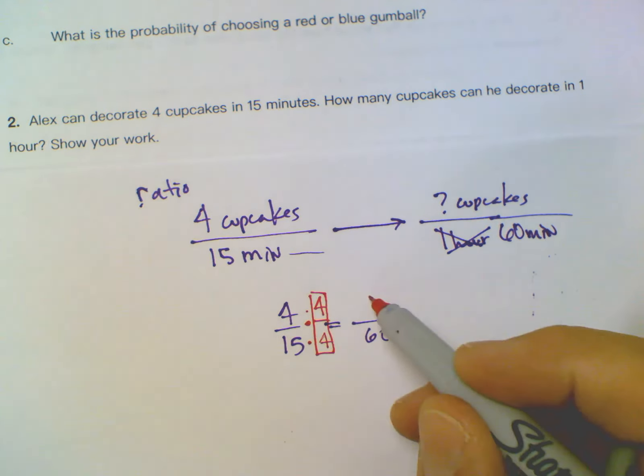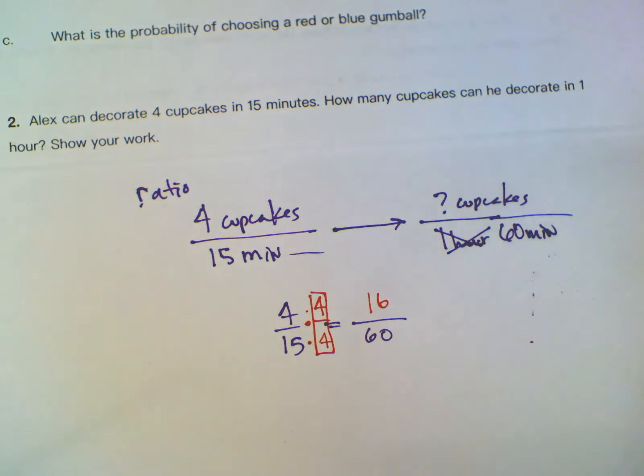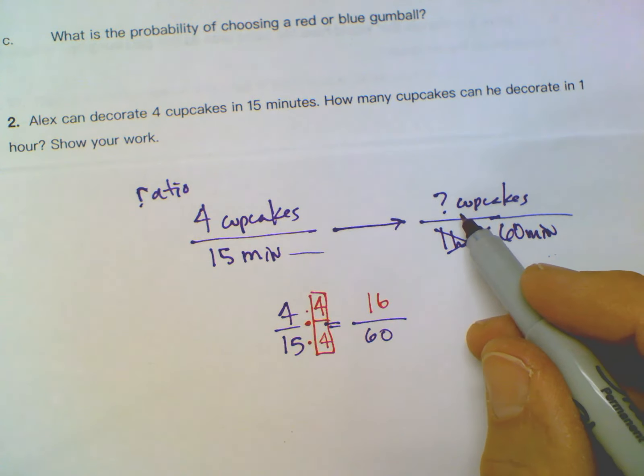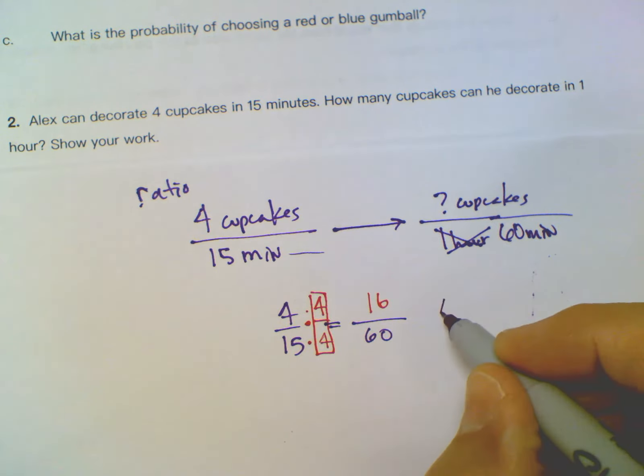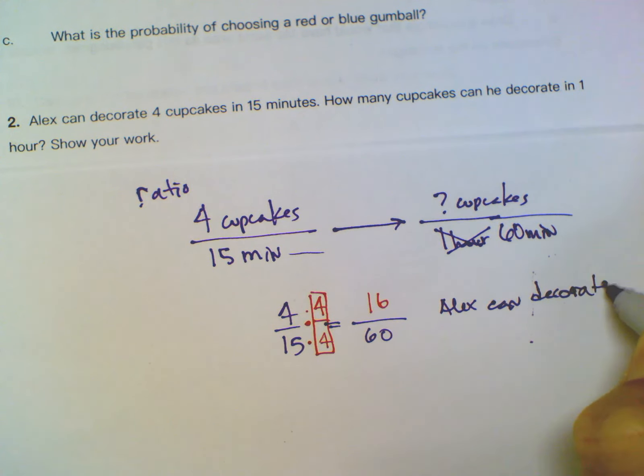So now I have a situation where I can rewrite this with just the numbers as fractions, and ratios act like fractions, they are fractions. So I want to find out if 4/15, how can I convert 4/15 to be something over 60? That's what I'm finding out.